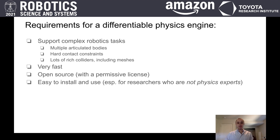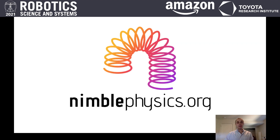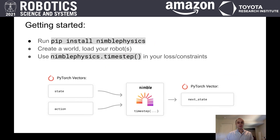To attempt to satisfy these criteria, today we're presenting an open-source fork of the Dart physics engine, which supports end-to-end analytical gradients in Python and C++. We're calling it Nimble. You can find documentation and examples at nimblephysics.org. We hope Nimble's Python API feels extremely familiar to researchers who have used popular physics engines like PyBullet and Dart in the past.